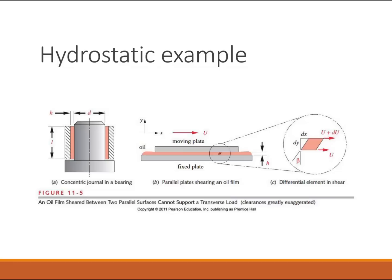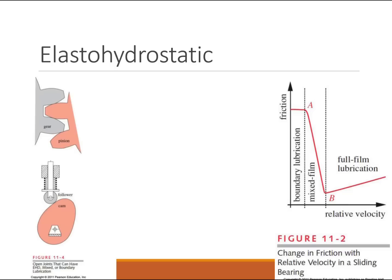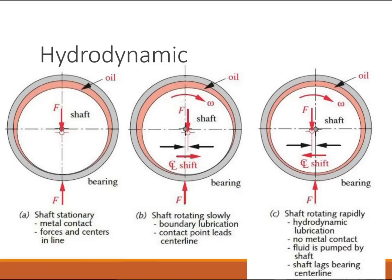A practical example of hydrostatic lubrication: some stadium domes are rolled out using hydrostatic pressure — you actually float the entire roof on a thin film of oil, and then you can slide it with very little work. Regarding elastohydrodynamic lubrication with gears and cams, figure 11.2 shows that as speed increases you get closer and closer to full film lubrication. There's an optimal relative velocity that gives full film and the least amount of friction, and that's what we'll design for.